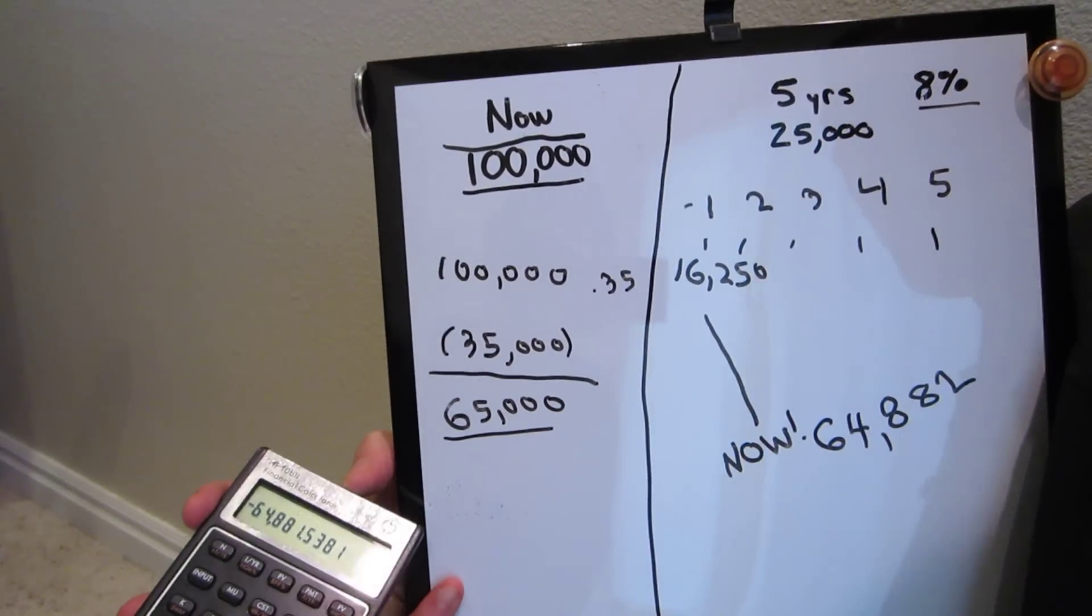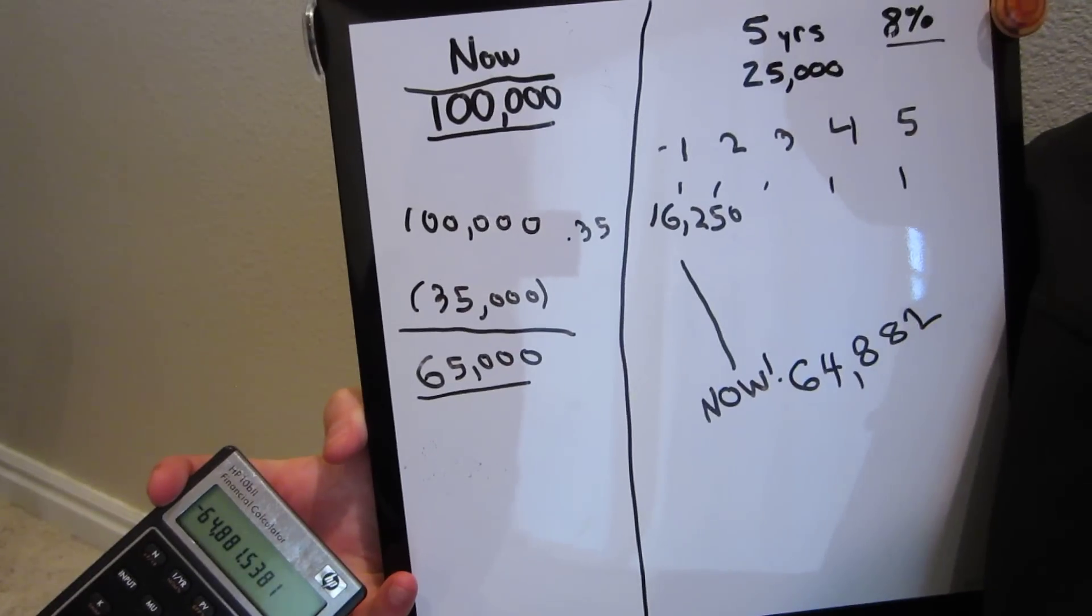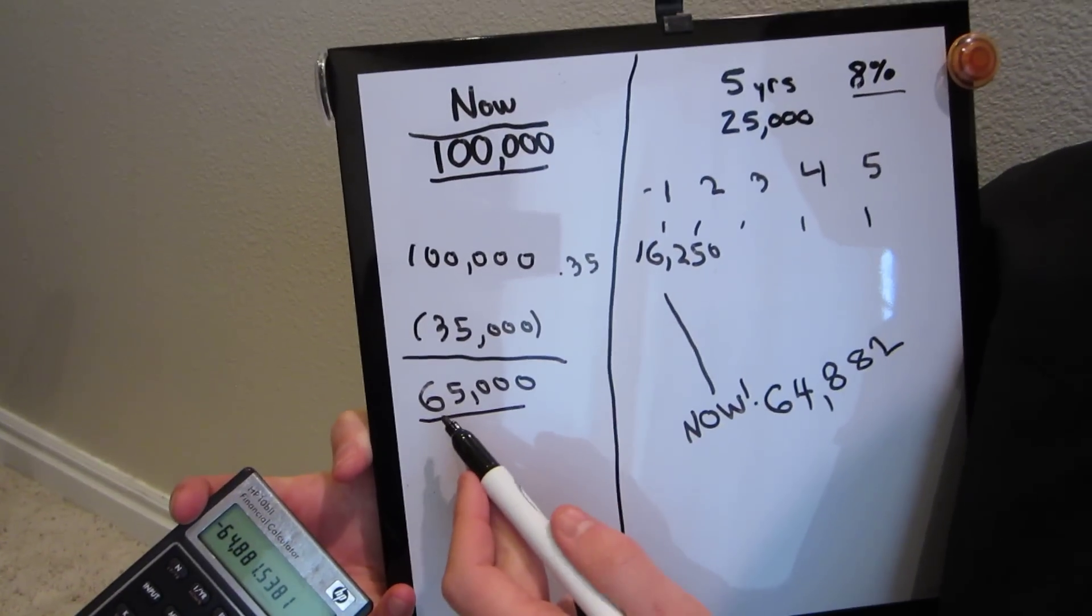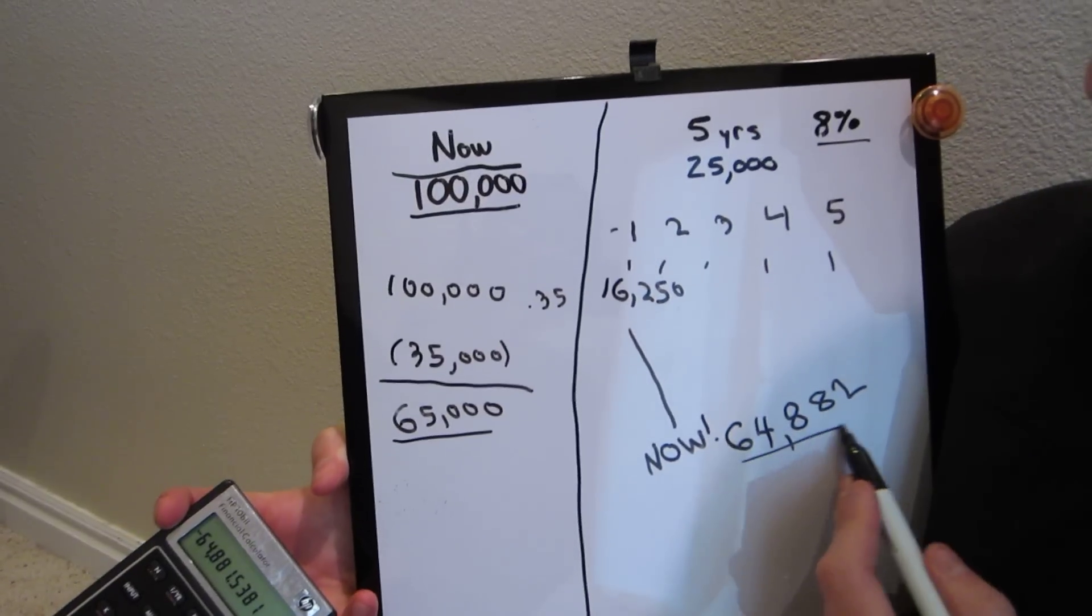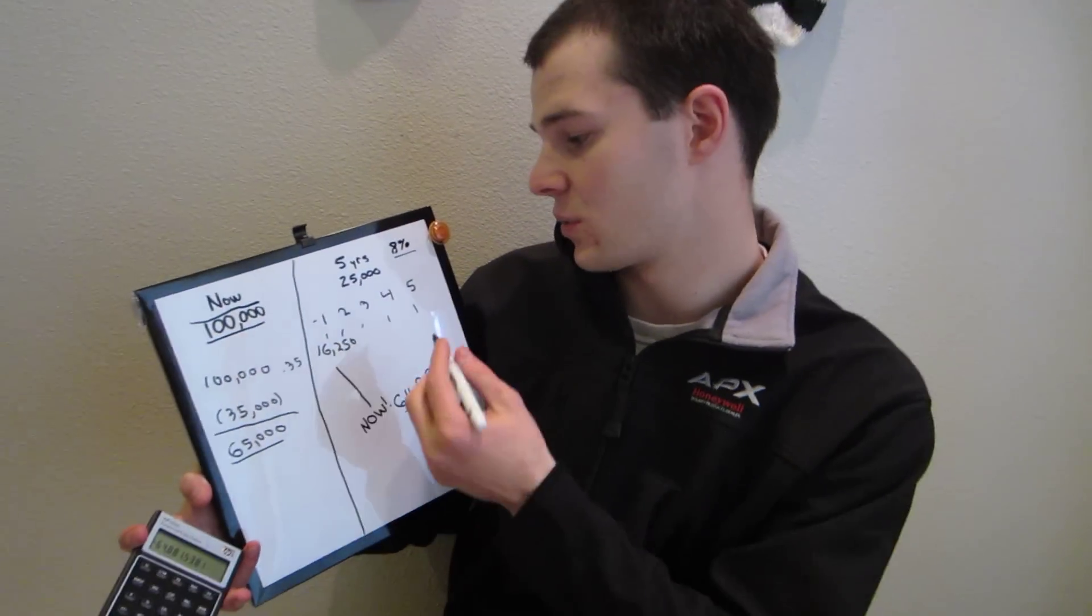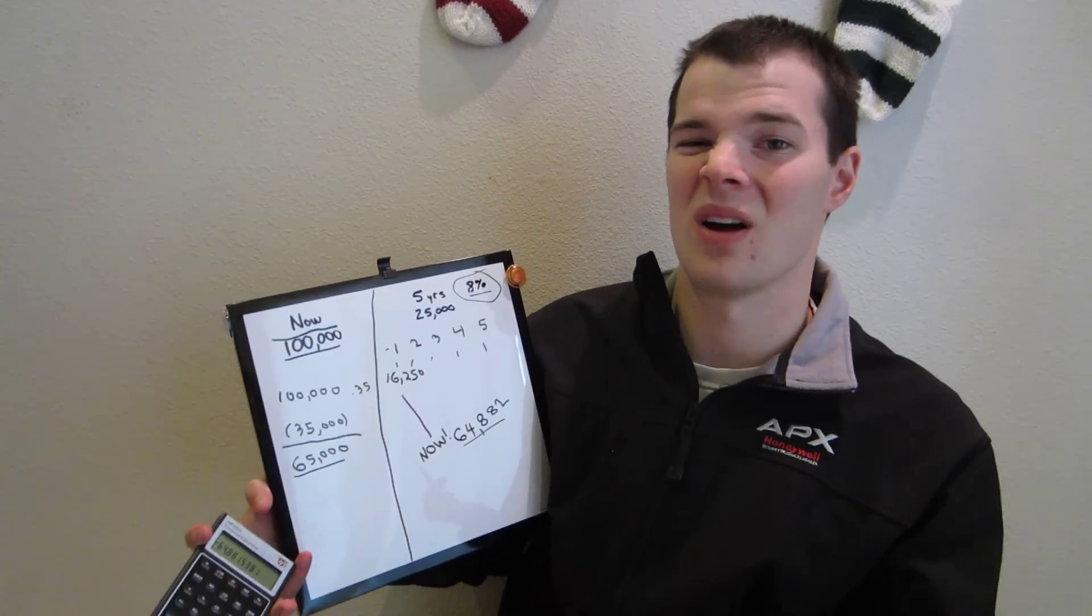So now we can see that both options are actually quite similar. If we decide to get the money now, our net present value is going to be $65,000, whereas if we decide to take the 5 payments, we're actually going to be getting less if we choose that option. That's with the taxes included, and assuming an 8% discount rate, which may not always be realistic.